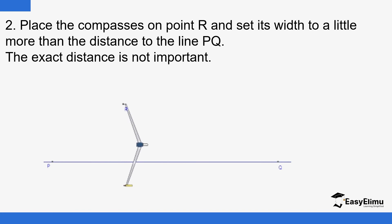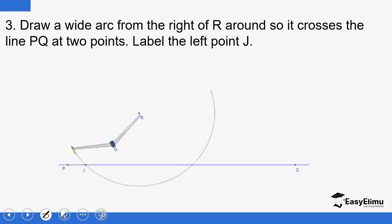Use that given point R as the center and a convenient radius. A convenient radius should be a little more than the distance of that point from the line — so extend your pair of compasses a little bit so the radius is slightly longer. Draw an arc to cut the line, and label the point where the sharp end lands as J.